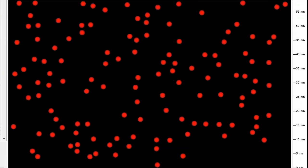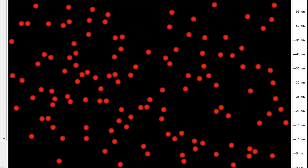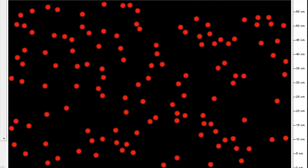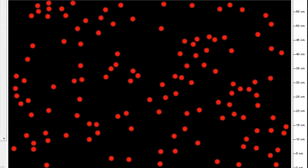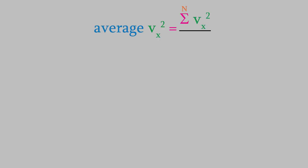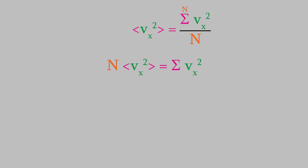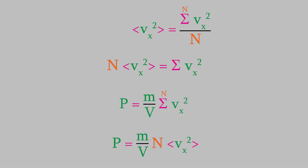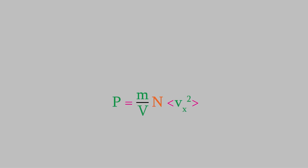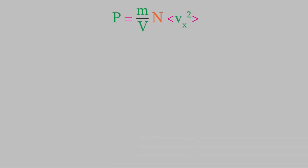Instead, think about what we would need to do if we just wanted to know the average of vx squared. When you take the average of something, you add the values of each item then divide by the number of items. So the average of vx squared is the sum of vx squared for each particle divided by n, the total number of particles. We use angle brackets to indicate the average value of a property. If we rearrange to solve for the sum and substitute into our pressure equation, we get a much better equation — instead of adding the squared velocity of each particle, we can just take an average, which is much easier.